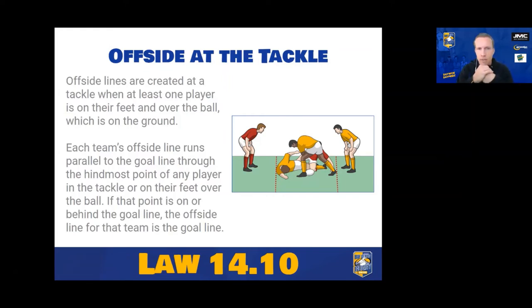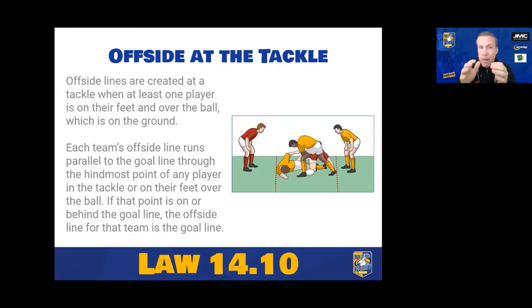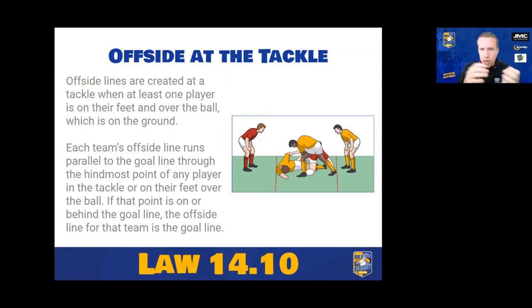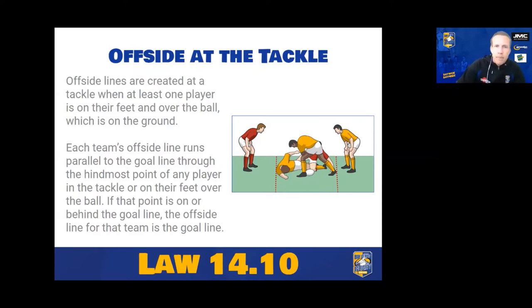The offside lines run parallel to the goal line through the hindmost point of any player in the tackle. All three types of players — tackle player, tackler, and any other players on the ground in the tackle area — are all part of the tackle. The offside line can't be in goal; if part of a player's body is in the end goal, the offside line becomes the goal line itself.